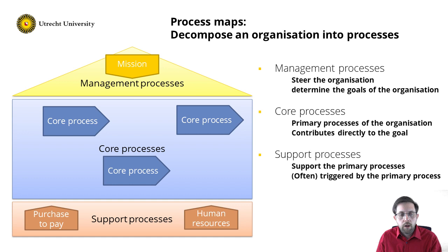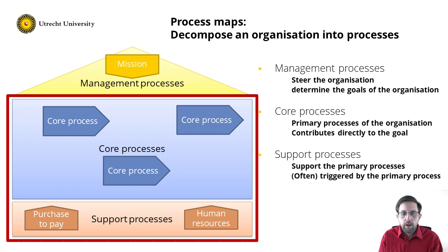In conclusion, a process map is an aid to identify processes in a given situation. It is a model of the organization that allows classifying processes into three categories: management processes, core processes, and support processes. In this course, we will focus on the core and support processes of an organization. And remember, the process map is a model, so you can apply the reflective modeling cycle on it as well.